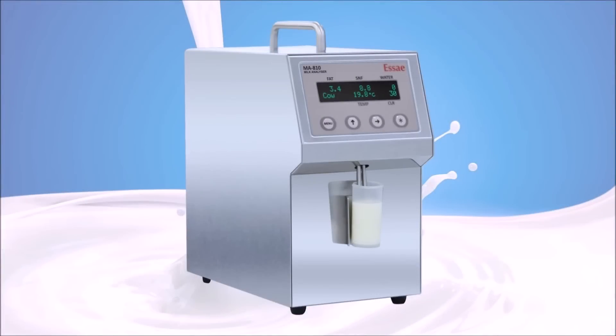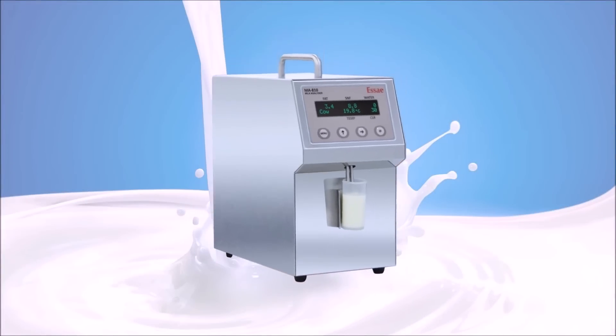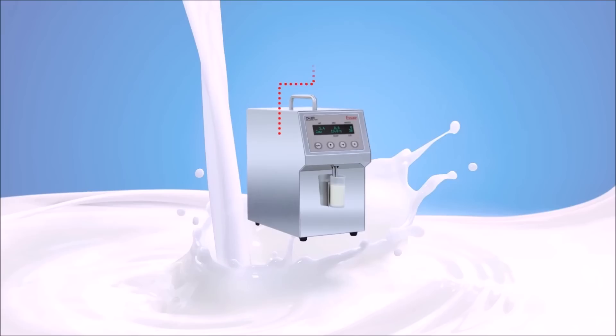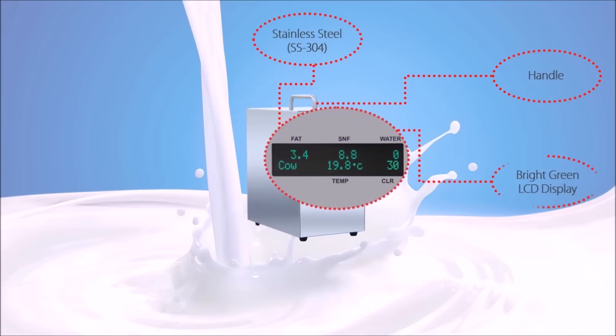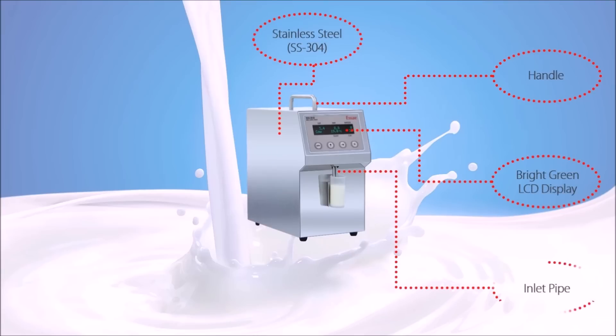The machine is equipped with stainless steel 304 enclosure for superior hygiene and maintenance. The handle on the top provides ease in mobility. Bright green LCD for easy readability. The inlet pipe will allow the intake of raw milk without any blockage from detachable milk sample container. Outlet pipe will release the milk.